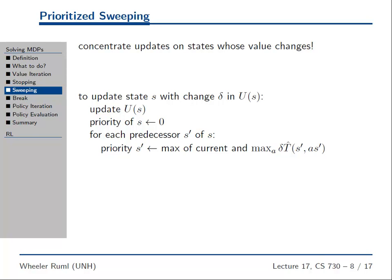You pull a state off the Priority Queue — let's say S comes off. Now we're going to update state S. We go and do a Bellman update for S: we go to S's successors, look at the current values for those successors, pull it back through the transition function, choose the optimal action, use the reward, and now we have a new value for the value function at S. We've now updated S, so its priority becomes zero.